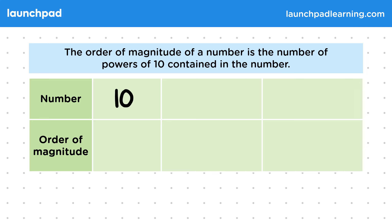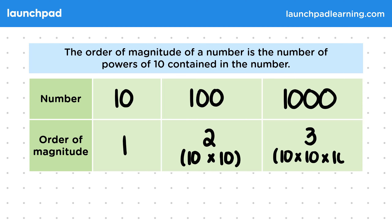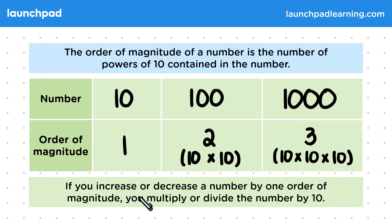For example, the number 10 has 1 order of magnitude — it has 1 power of 10 contained within it. 100 has 2 orders of magnitude; it's equal to 10 times 10. And 1,000 has 3 orders of magnitude — it contains 3 powers of 10. If you increase or decrease a number by 1 order of magnitude, you multiply or divide the number by 10.